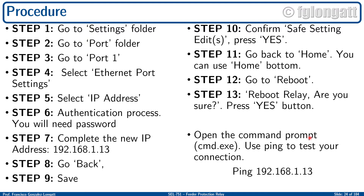The procedure is extremely simple — basically 13 steps. Go to Settings, then to Port, then inside Port 1, then go into Ethernet port settings, select IP address, put the password and fulfill the authentication process. Then go and change the IP address — in this case today I will use 192.168.1.13 because that is one of the IPs available at the lab. Then go back, save the settings, confirm the settings, and then go home to the home menu of this relay, because I would like to reboot the relay. After reboot I will use the command prompt tool in Windows to test the connection.